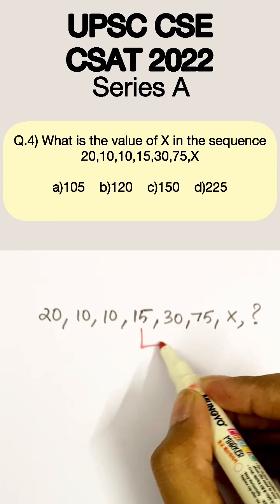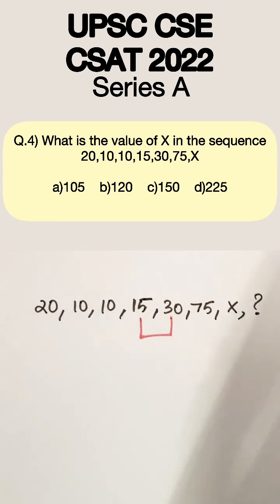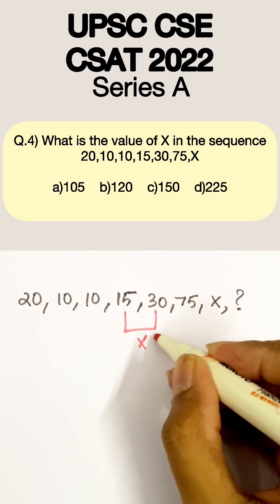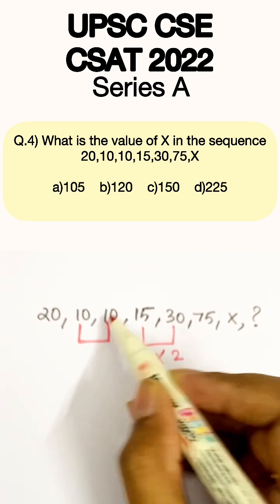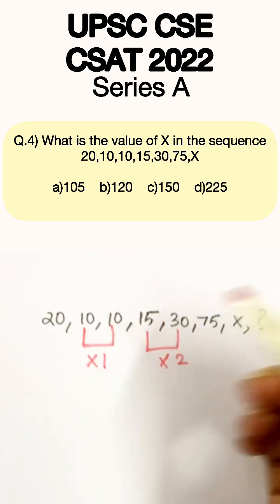I think everyone will notice the relation between 15 and 30, right? So this is 15, 2s are 30. And what can you see here? 10 into 1 is 10, right?